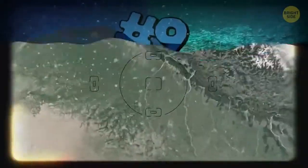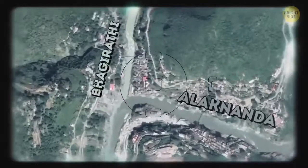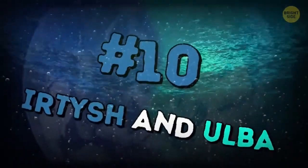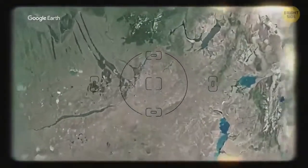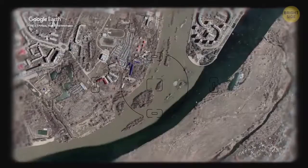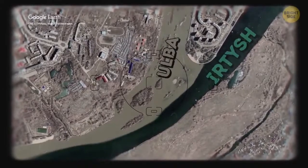Alaknanda and Bhagirathi rivers meet in India. Alaknanda is dark and Bhagirathi is light. Irtysh and Ulba flow into each other in Kazakhstan, near the city whose name you'll never be able to pronounce. Nor will I. You give it a shot. The Irtysh has clean water and Ulba cloudy.